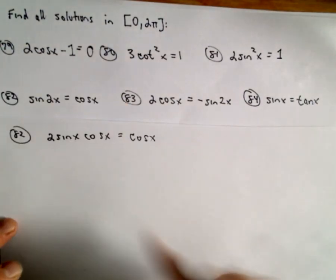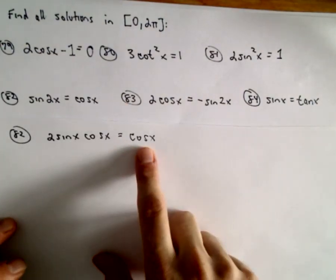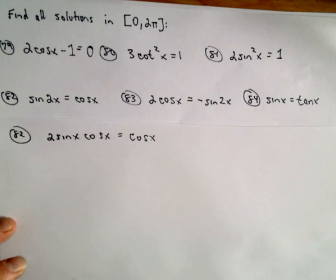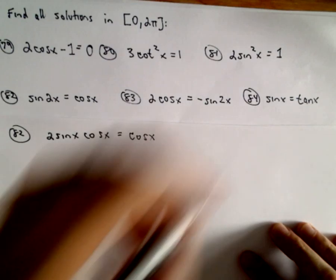Now be careful here. A common mistake would be to divide both sides by cosine x, and do not do that because that is not correct. You're basically throwing away a solution in that case.